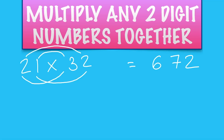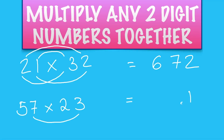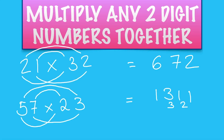Let's do another example, a little bit harder this time: 57 times 23. So we've got 7 times 3 is 21. Then our inside: 7 times 2 is 14. Our outside: 5 times 3 is 15. 14 and 15 make 29, plus the extra 2 makes 31. And then our firsts: 5 times 2 is 10, plus 3 is 13. So we get 1311.